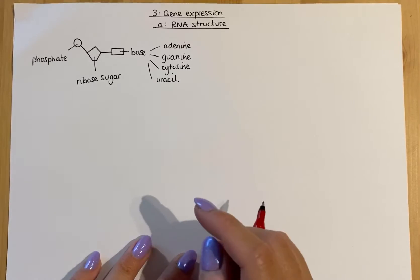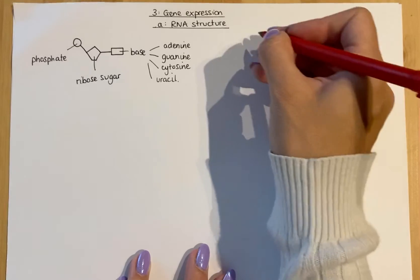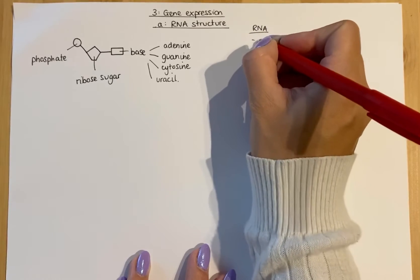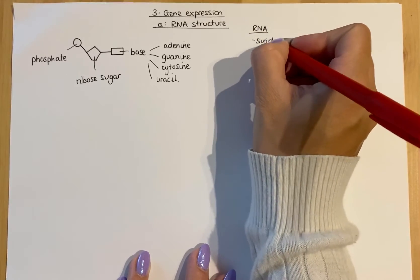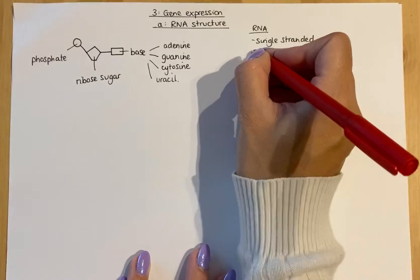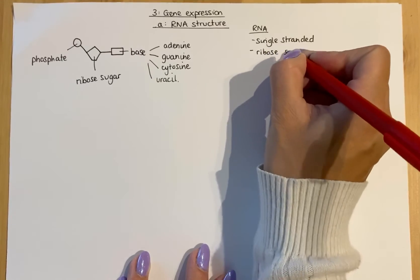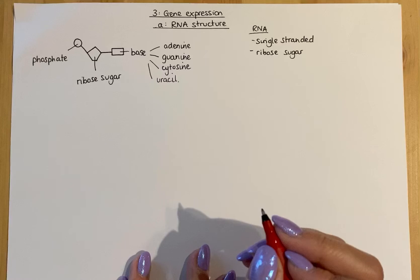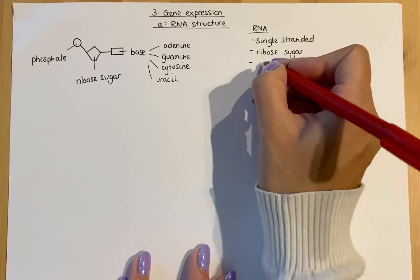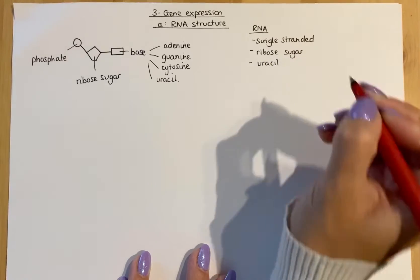When comparing the structure of DNA to RNA, we discuss three main things. First, how many strands it has - RNA is single stranded whereas DNA is double stranded. RNA contains a ribose sugar instead of the deoxyribose that DNA contains. And in terms of bases, we have uracil which replaces thymine.